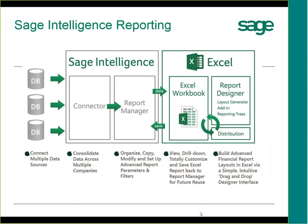Let's talk about how SAGE Intelligence works. We start on the left-hand side with the databases — pictured as silver cylinders — which are multiple data sources including your SAGE ERP, other SQL databases, and other information. SAGE Intelligence includes two modules: the Connector, which makes the connection to all the databases, and Report Manager, the authoring tool where you run your reports, set parameters, filters, and aggregate information.